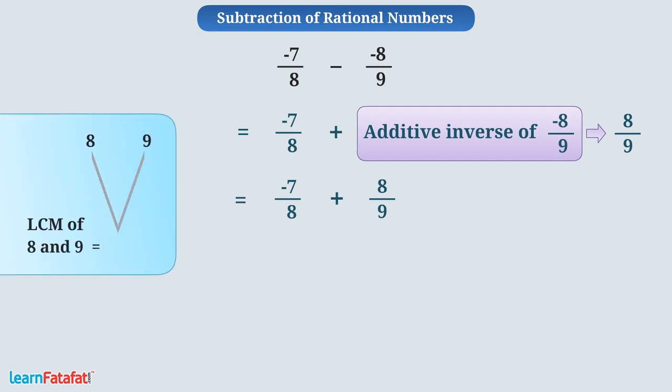Let's make denominator of minus 7 by 8, 72 by multiplying numerator minus 7 and denominator 8 by 9. The rational number becomes minus 63 upon 72.